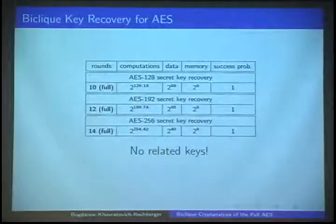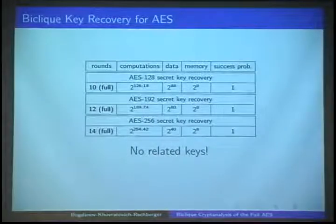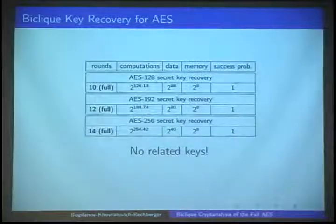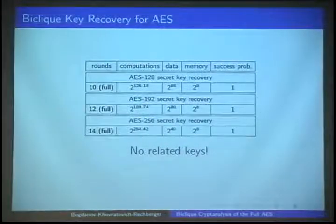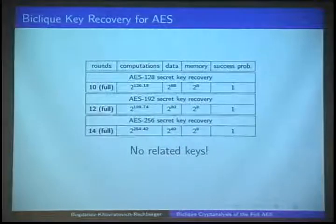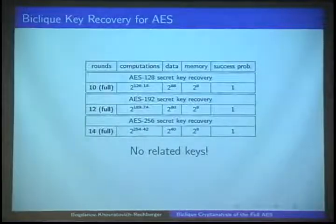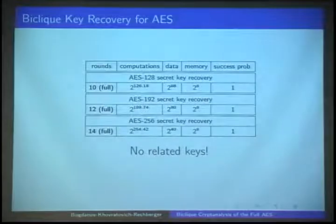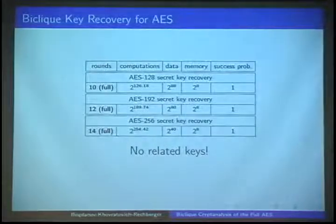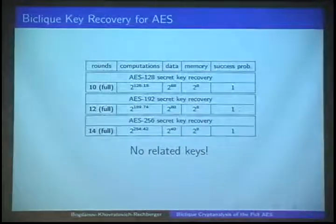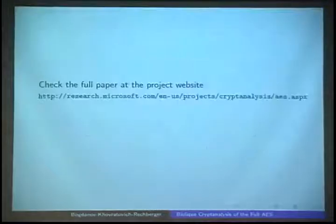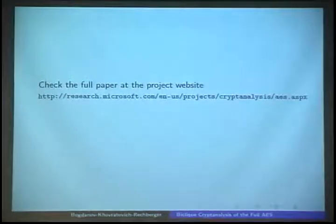We cover all three full AES versions with advantage factors from three to five, so the probability is one. Memory complexity is negligible. We don't need any related keys—it's single secret key model. You might want to check out our paper at the project website. Thank you.